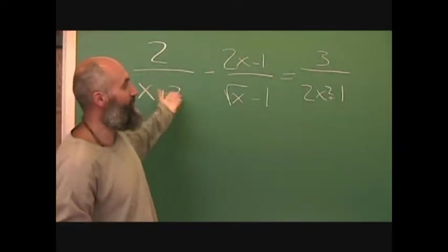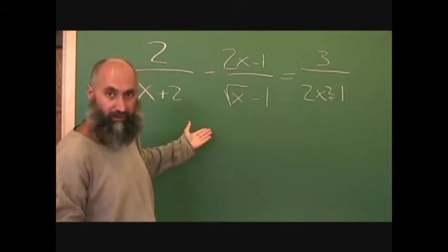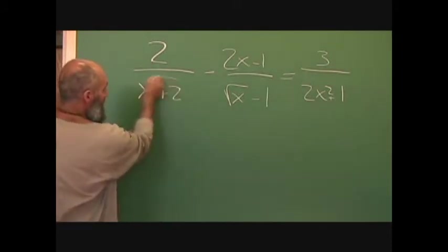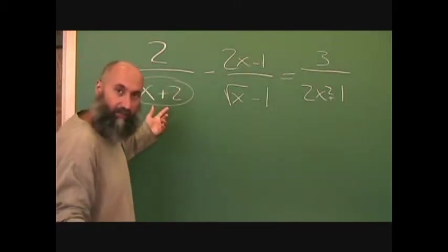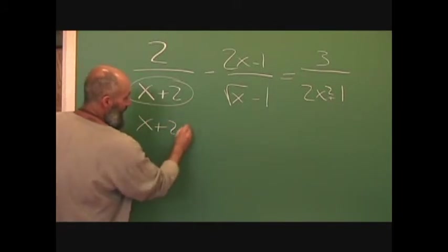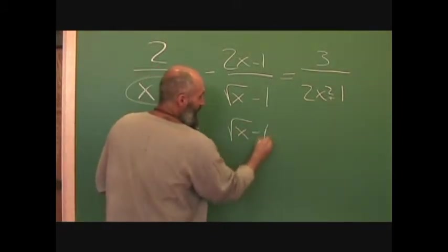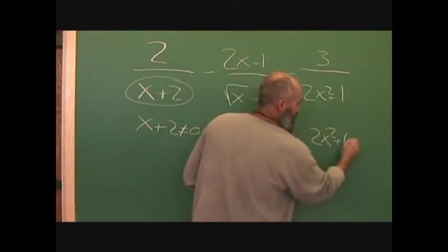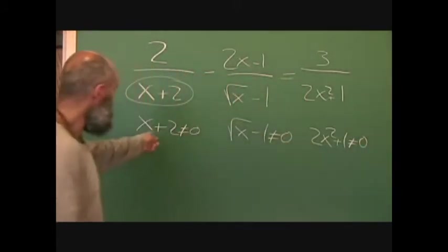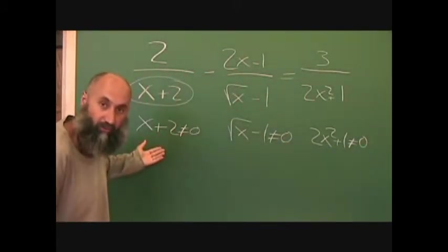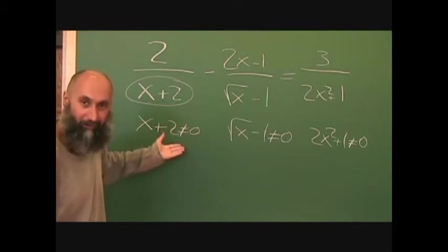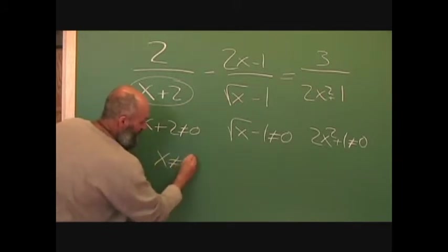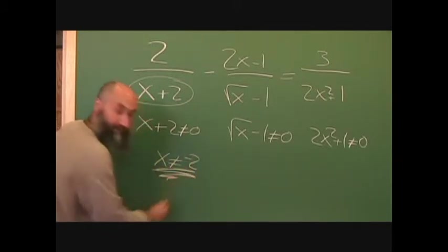So let's find the restrictions. All you do is take the denominator and say it can't equal zero. So you go: x plus 2 can't equal zero; square root of x minus 1 can't equal zero; and 2x squared plus 1 can't equal zero. Those are your restrictions, but you're going to have to solve these. For the first one, x cannot equal negative 2.